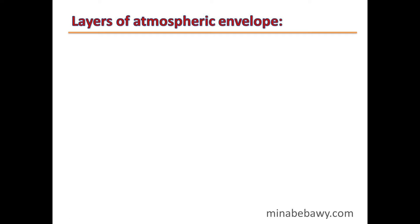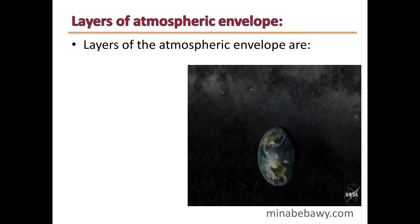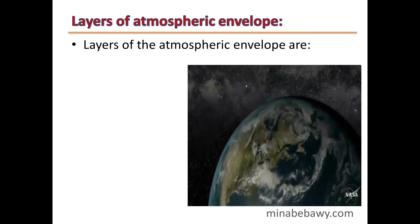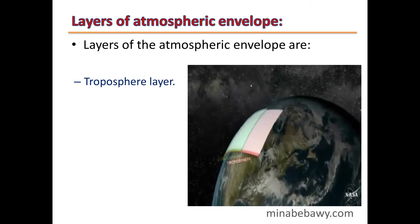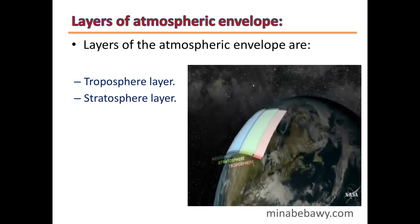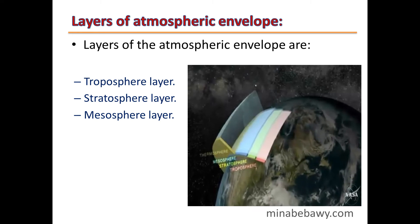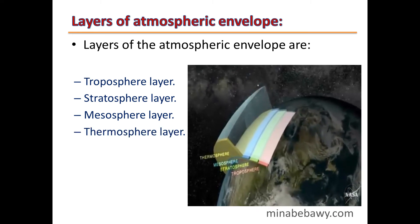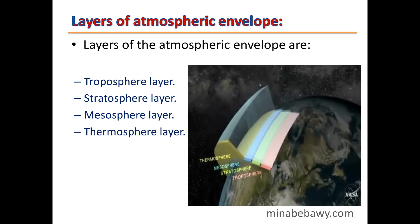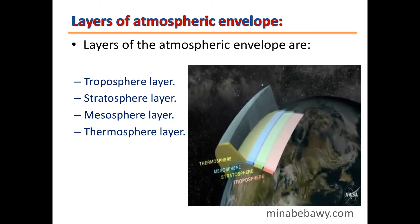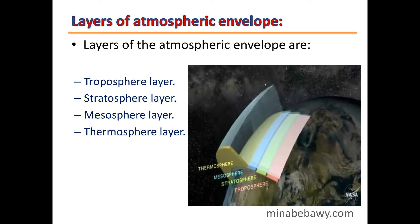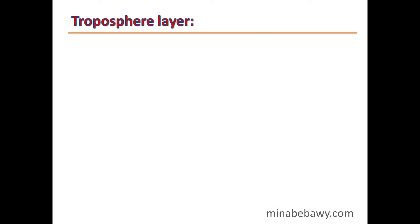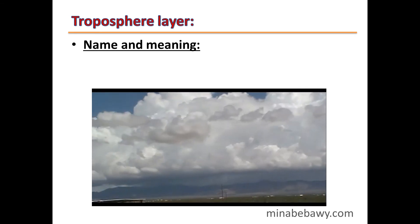The layers of the atmospheric envelope are: the first layer, Troposphere; then Stratosphere; then Mesosphere; and finally Thermosphere. So the atmospheric envelope consists of four layers: Troposphere, Stratosphere, Mesosphere, and Thermosphere.